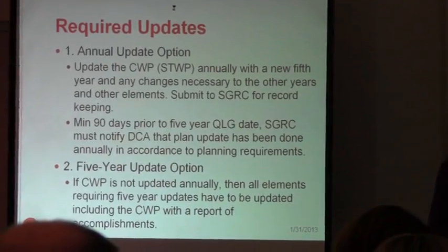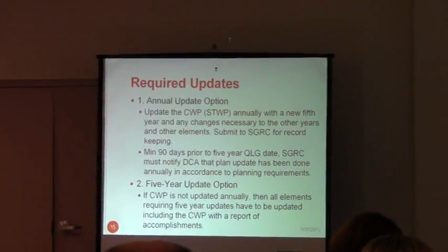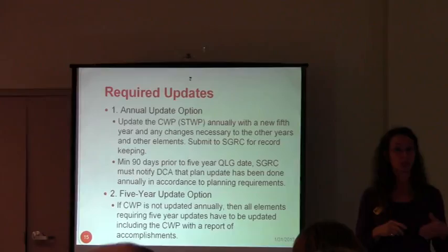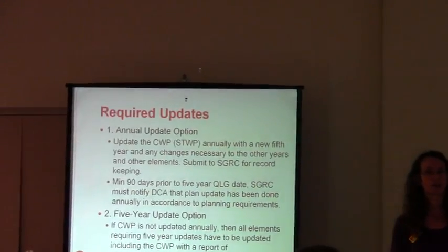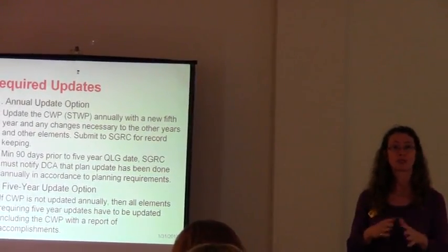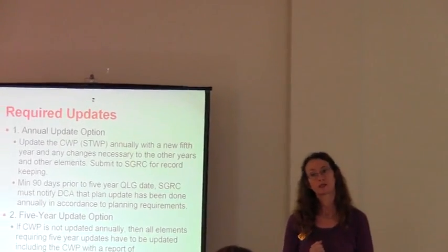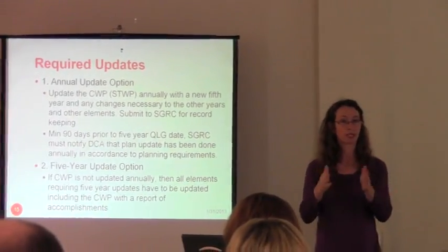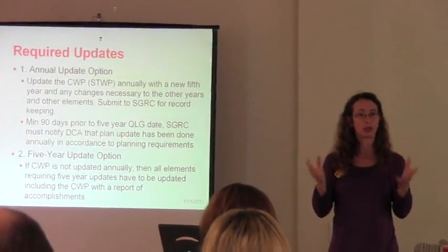You have to do a public hearing every year and say we've looked at the comp plan, we've adopted a new fifth year on the short-term program, and then you just send it to us and we keep it on file. If you do that every year, at the end of the fifth year, all we have to do is send a certification to DCA saying the community did this every year in compliance with the minimum standards — they don't have to do a full five-year update because you've done it every year. So it's a little bit of work every year instead of doing a lot of work in the fifth year.